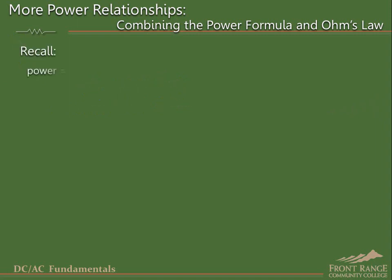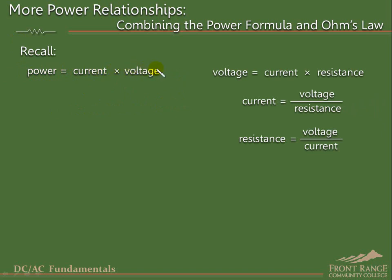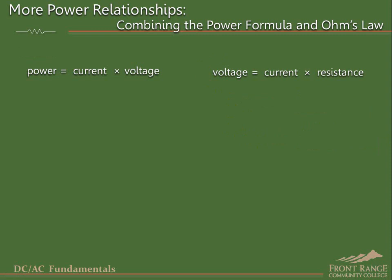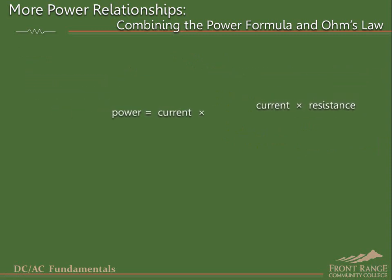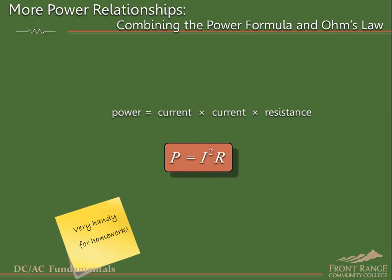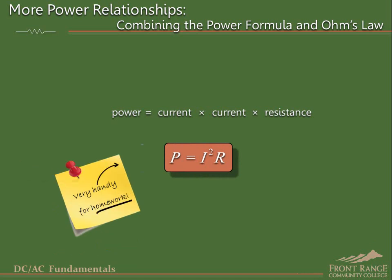We begin with the familiar power formula, which states that power is equal to current times voltage. Also recall the relationship between voltage, current, and resistance as stated in the three forms of Ohm's law shown here. Substituting for voltage in the power formula using the first form of Ohm's law — voltage equals current times resistance — we can rewrite the equation as power equals current times current times resistance, or equivalently, P equals I squared times R. This useful relationship is known as Joule's law. Here are some examples.